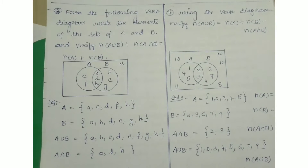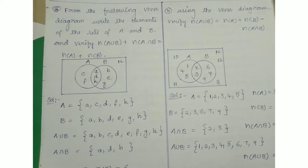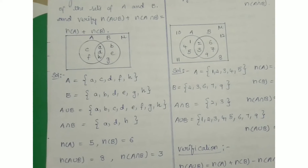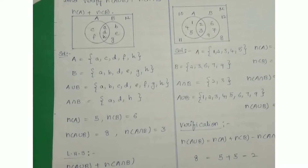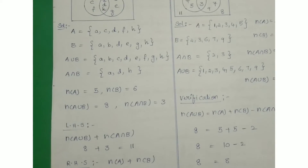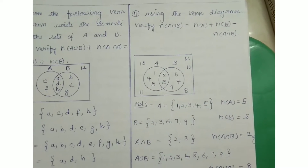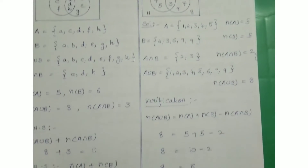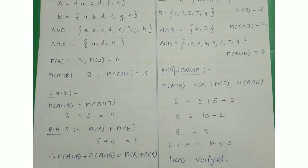Coming to chapter number two — Sets. From the given Venn diagram, write the elements of sets A and B and verify that n(A ∪ B) + n(A ∩ B) = n(A) + n(B). Everything is shown clearly. This is the most important question from chapter two.